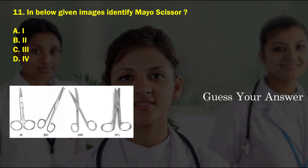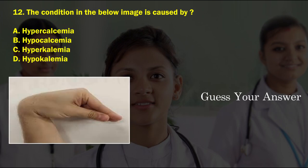In the below given images, identify the Mayo scissor. The correct answer is option C.